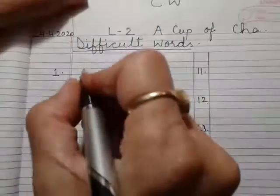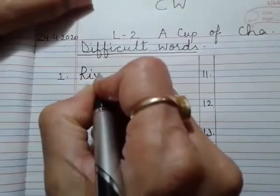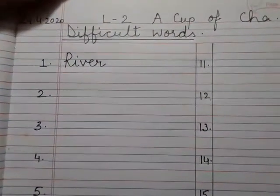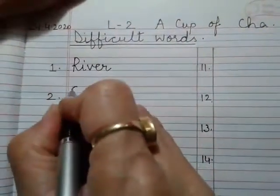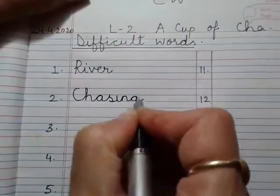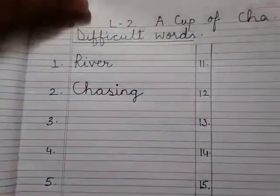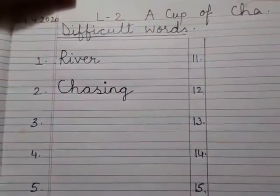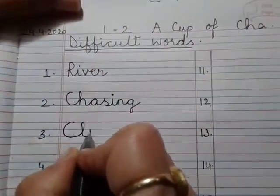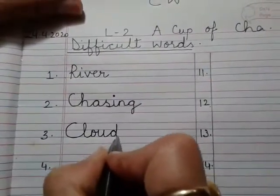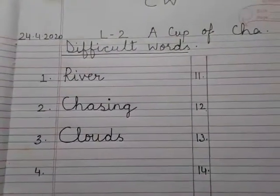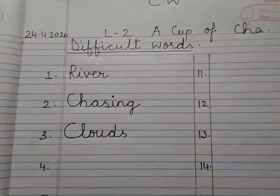First word is River. River means nadi — hamare Mathura mein kaun si river beheti hai? Ya Yamuna river. Chasing — chasing means kisi cheez ka pichha karna, use pakarne ke liye. Jaise titli urti hai toh bachche bhagte hain na uska pichha pakarne ke liye. Chasing. Clouds — clouds means badal. Sky mein kabhi kabhi clouds hote hain — white clouds, black clouds, grey clouds. Badal.